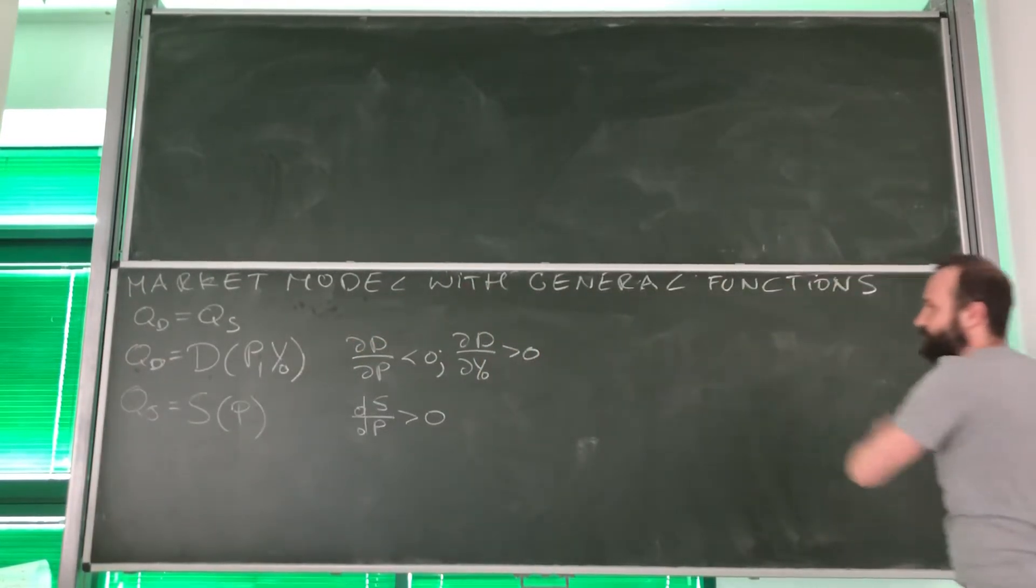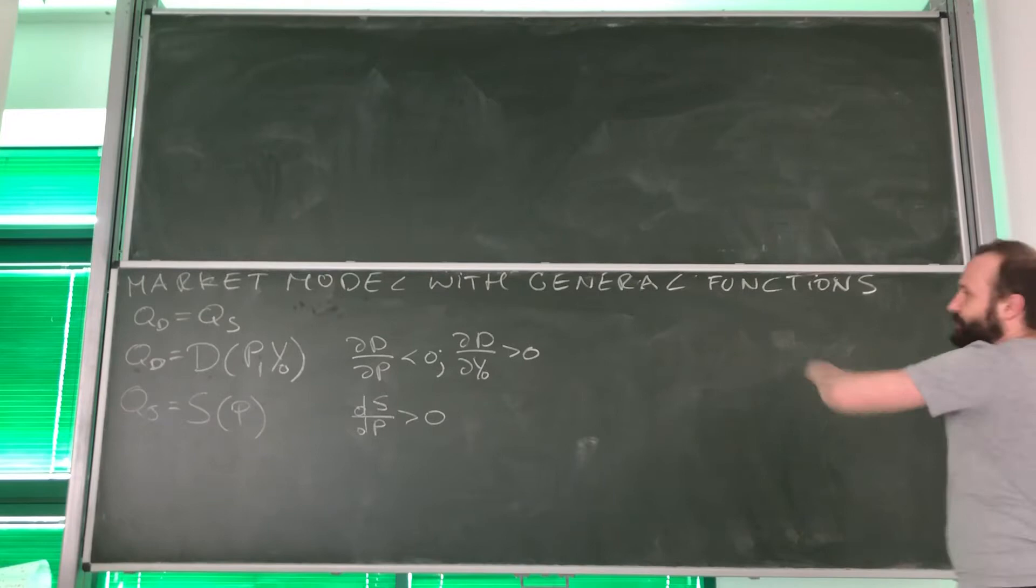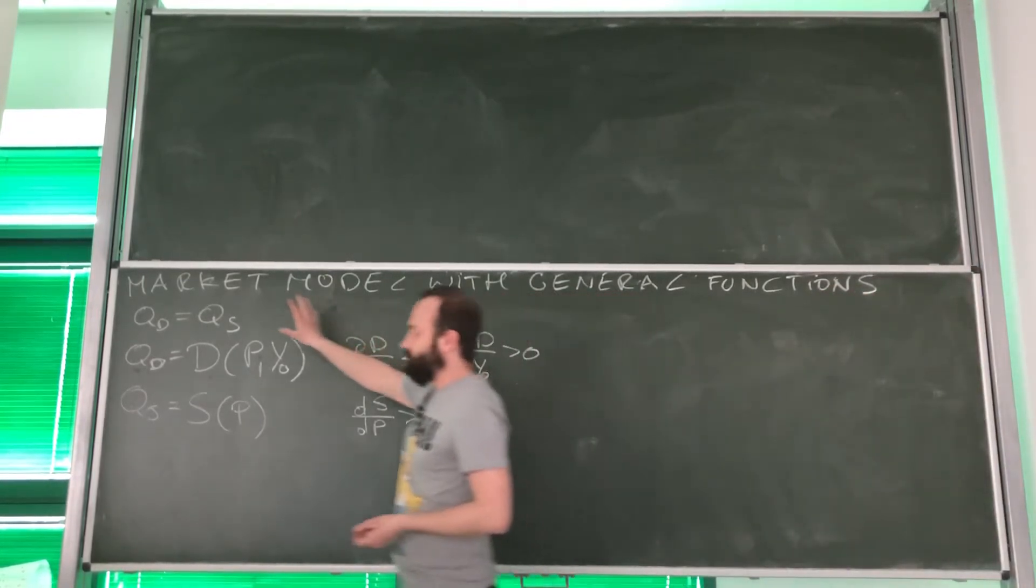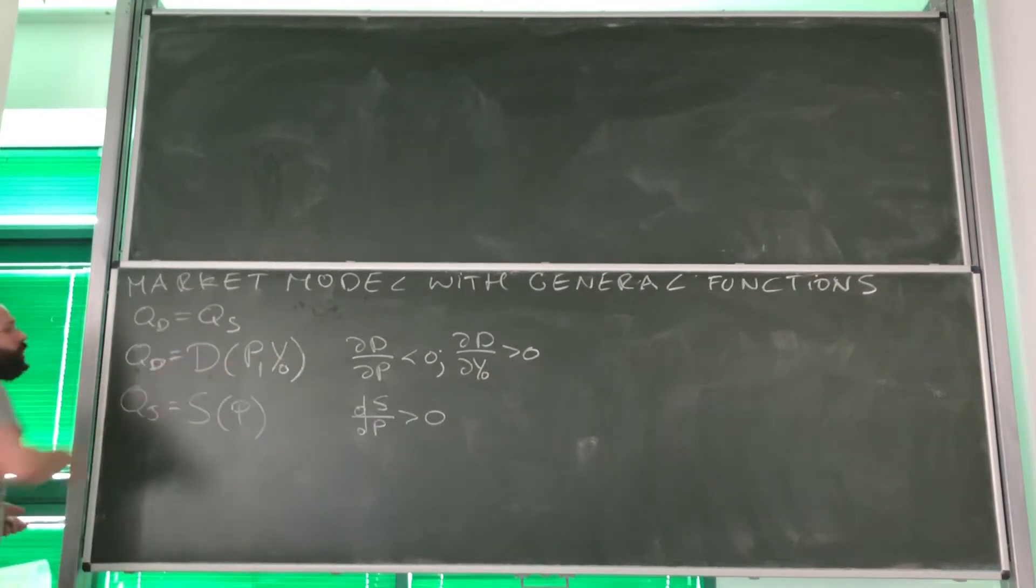What do I mean by general functions? Look, this is the new market model. First equation is the way we know it from before, quantity demand and quantity supply in equilibrium condition. However, look, now it comes different.